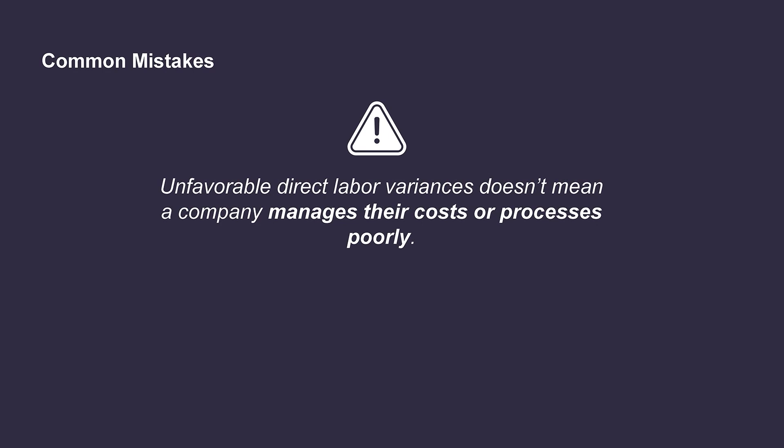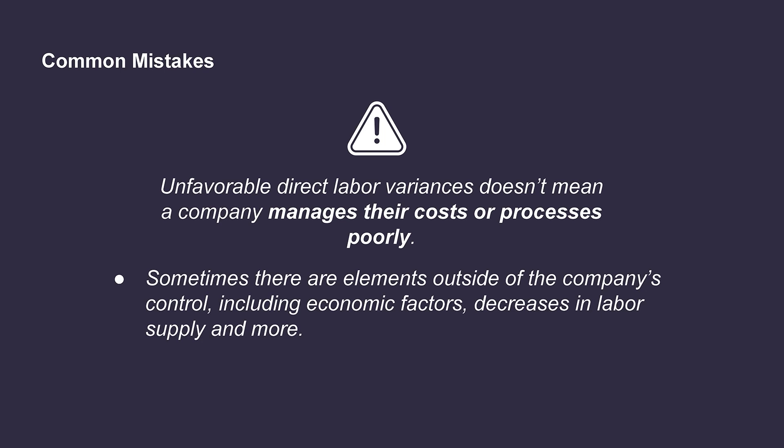Now, a common misconception: just because a direct labor variance is unfavorable doesn't automatically mean that the company managed their costs or processes poorly. It's possible that there were elements outside of the company's control that led to the result. For example, there could have been unexpected economic factors that impacted the hourly wage rate, such as increases to minimum wage. Or maybe the labor supply decreased and in order to hire skilled employees, the company was required to offer a higher rate than anticipated. Both scenarios would result in unfavorable variances. So while variance analysis is an important tool, it's important to remember that there are some limitations outside of the company's control.